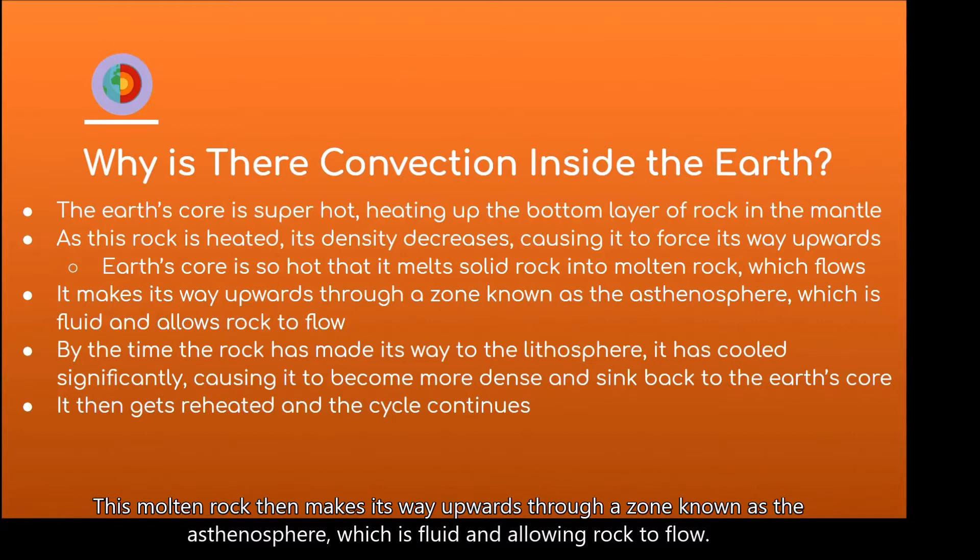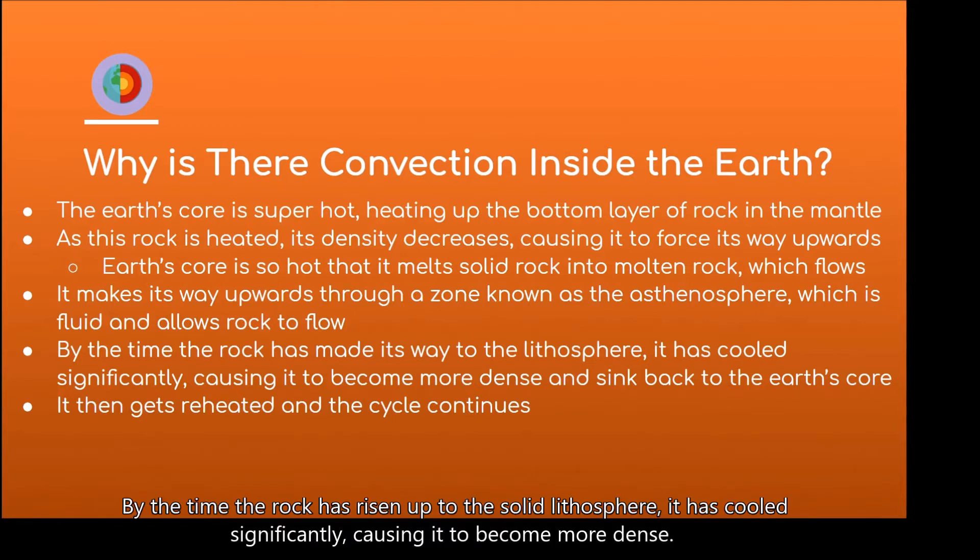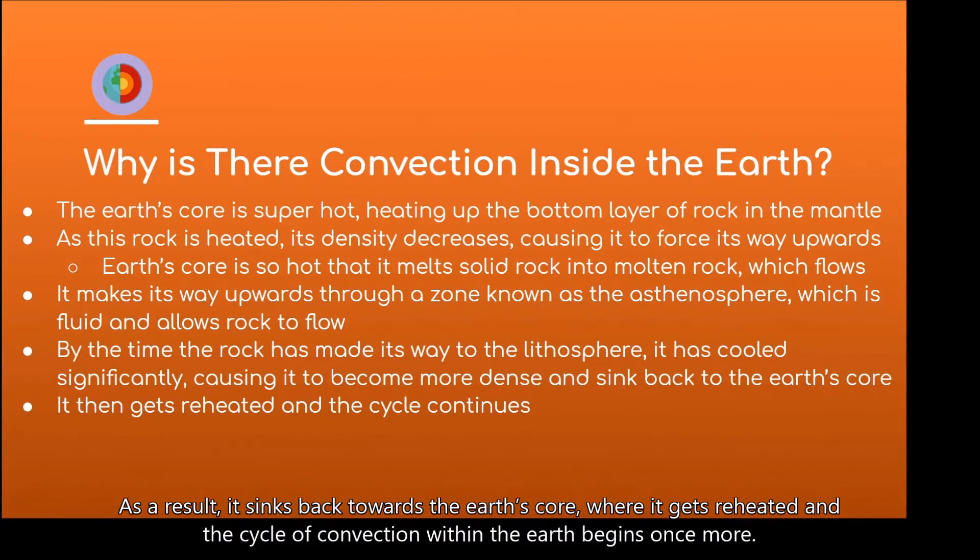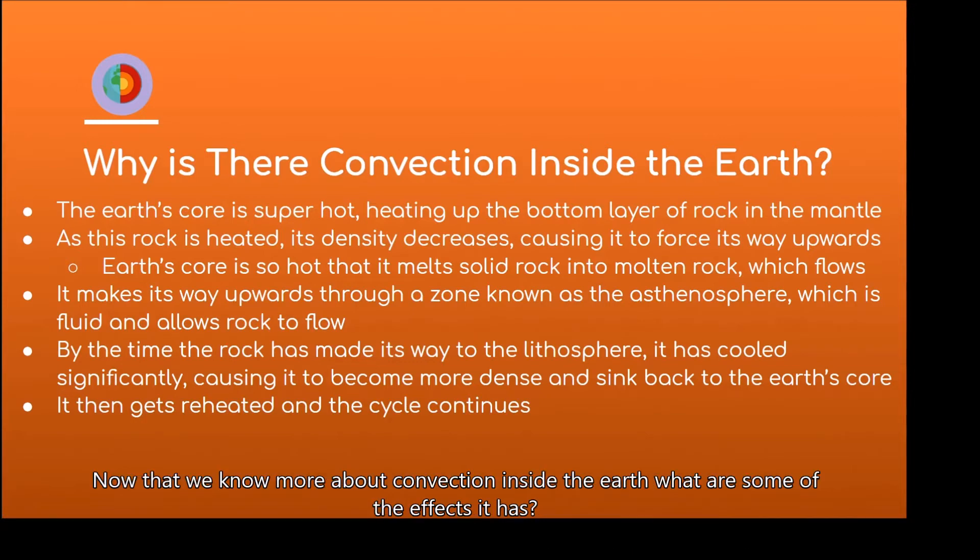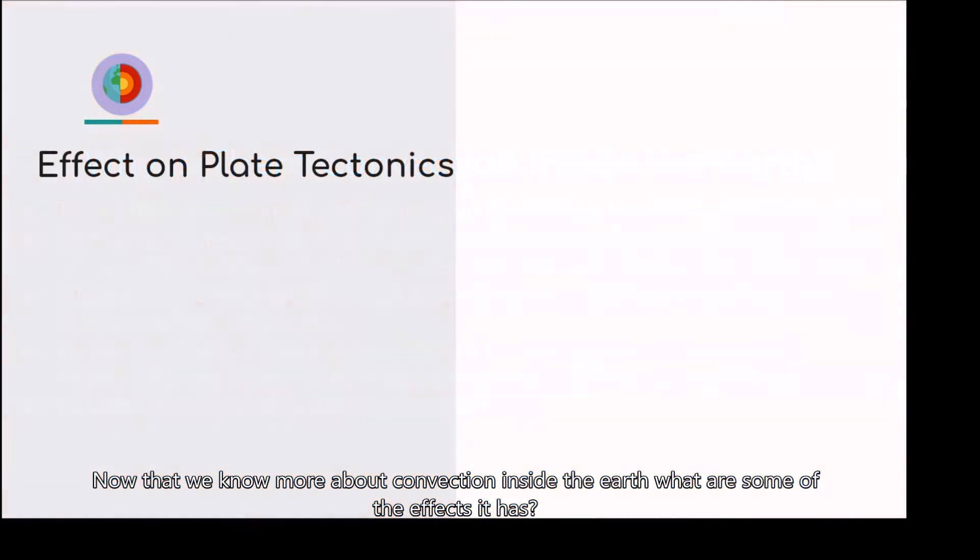This molten rock then makes its way upwards through a zone that is the asthenosphere, which is fluid and allowing rock to flow. By the time the rock has risen up to the solid lithosphere, it has cooled significantly, causing it to become more dense. As a result, it sinks back towards the Earth's core, where it gets reheated and the cycle of convection within the Earth begins once more. Now that we know more about convection inside the Earth, what are some of the effects it has?